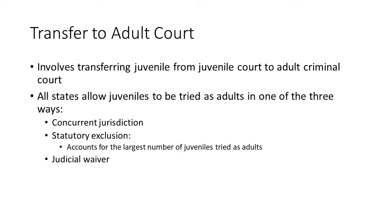Judicial waiver is a common method and one of the longest in history — originally it was the only means of waiving a juvenile to adult court. What happens is the prosecutor files a petition with the juvenile court requesting that the court waive its original jurisdiction over the offender and send him or her to adult court. The court holds a hearing and, in its discretion, makes the decision of whether or not to send the juvenile to adult court.